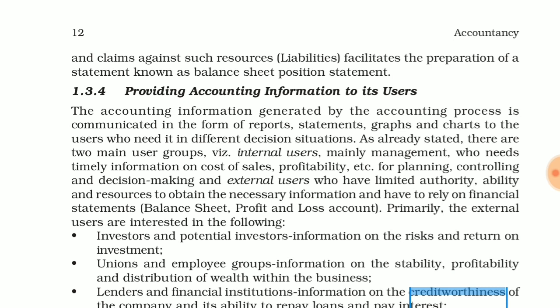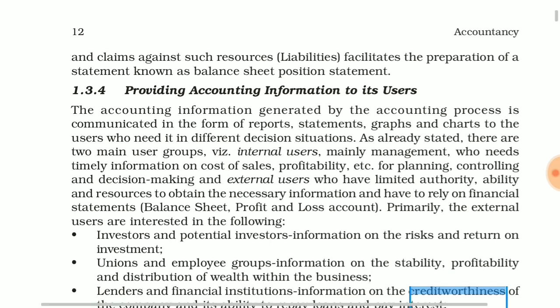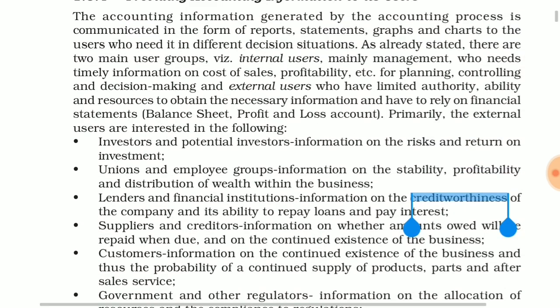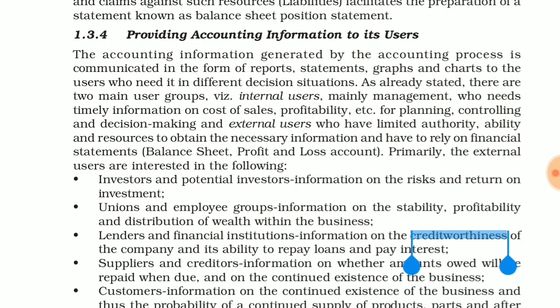What is the use of accounting information to the users? The accounting information generated by the accounting process is communicated in the form of reports, statements, graphs and charts to the users who need it in different decision situations. In Hindi, it is written that accounting information is generated through the accounting process, in which we prepare different reports, statements, graphs and charts. The user can access these things, study them, analyze them, and find out how to improve the situation.